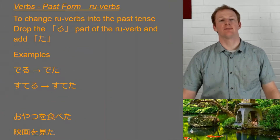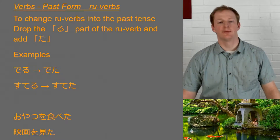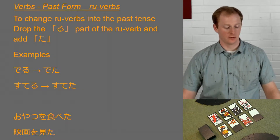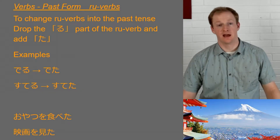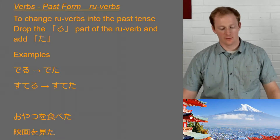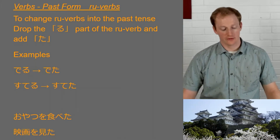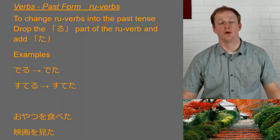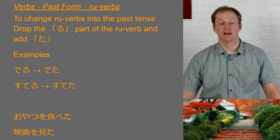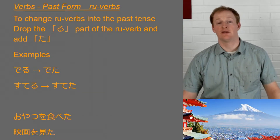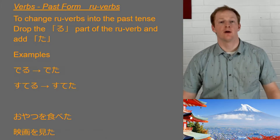First we're looking at past form for ru verbs. Pretty simple — all we do is drop that final ru and put ta in its place. So we've got deru → deta, suteru → suteta. In a longer sentence: oyatsu wo tabeta — oyatsu is a snack, so 'I ate a snack.' And eiga wo mita — eiga is a movie, so 'watched the movie.'